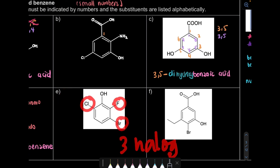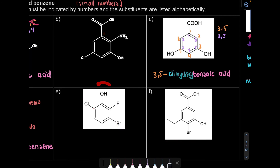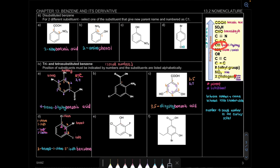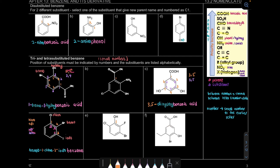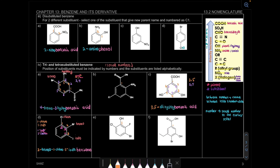For question E, we also have halogens but OH is present — OH has higher priority, so OH is the parent, making it phenol at carbon 1. For question F, there are 4 substituents, but carboxylic acid is present, so it is the parent — benzoic acid at carbon 1. Questions E and F you should try yourself.